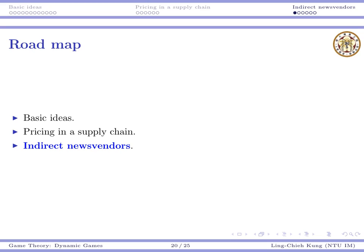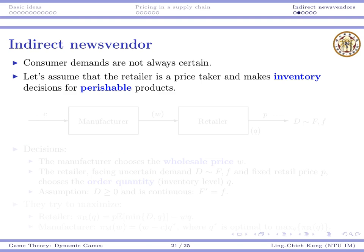Not all players are making pricing decisions — one of them will be a newsvendor. We're going to show that when two players make their decisions one by one, the equilibrium order quantity or the equilibrium inventory level will be too low.